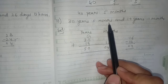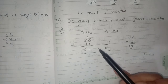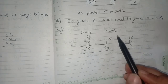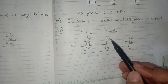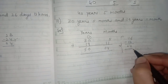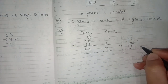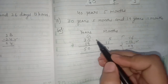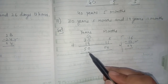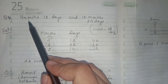Next is number 10: 30 years 5 months and 19 years 11 months. Put values: 30 years 5 months and 19 years 11 months. Add months: 5 plus 11 is 16, more than 12 — subtract 12 to get 4. Write 4 under months. The 12 months carries over as 1 year. After addition we get 50 years. Answer: 50 years and 4 months.